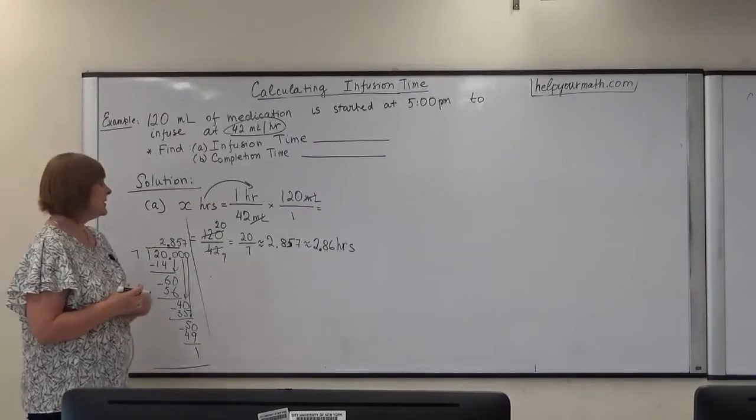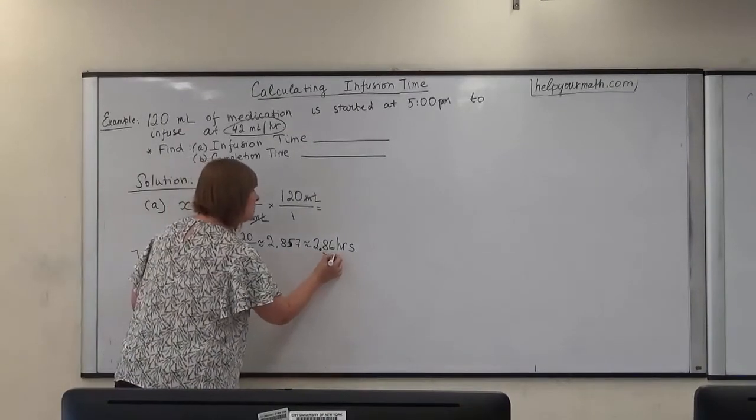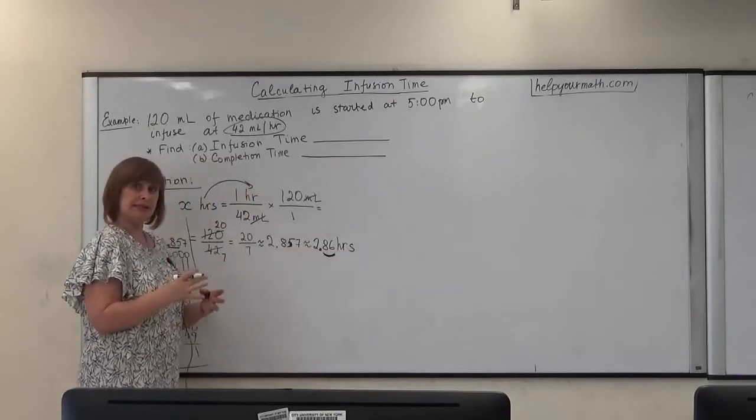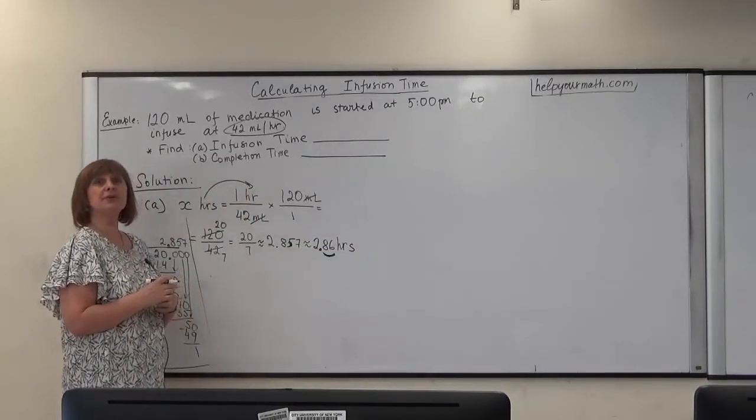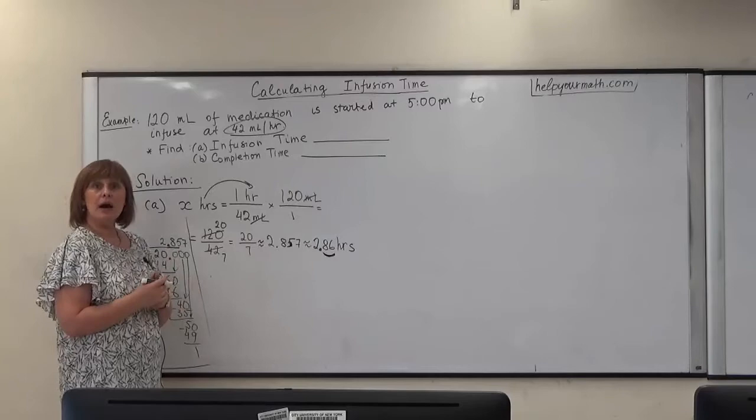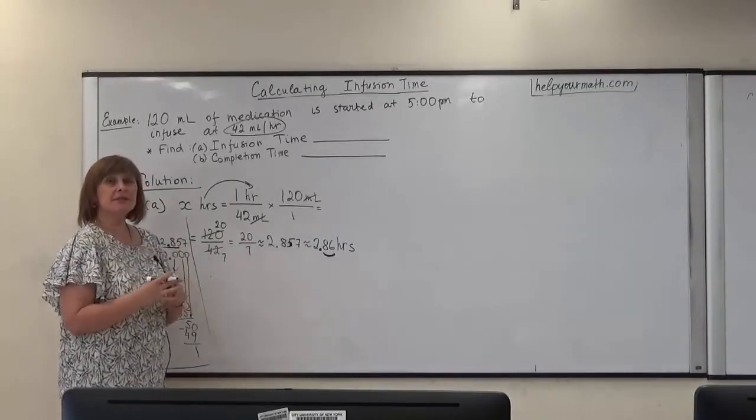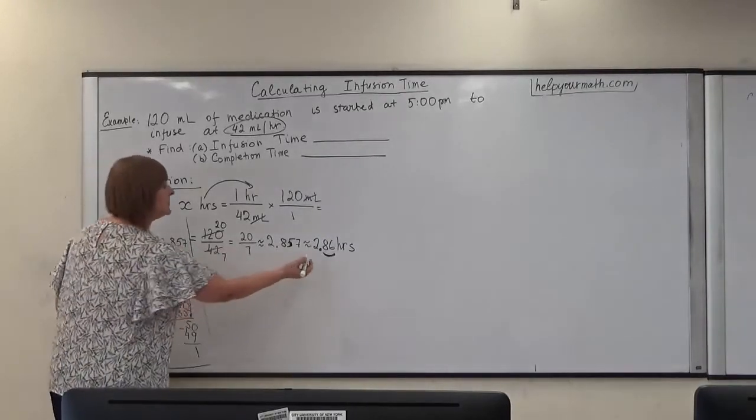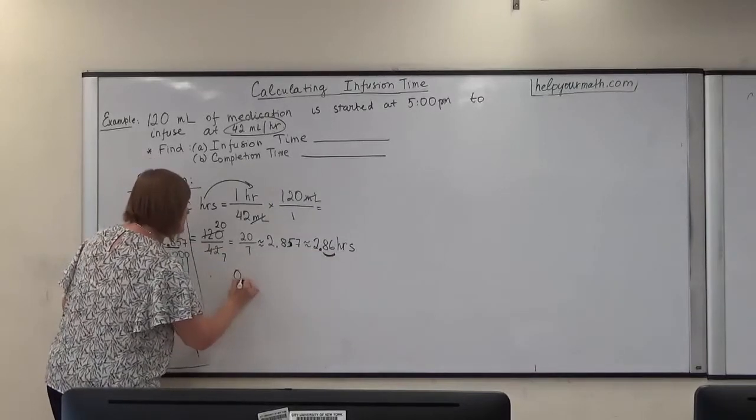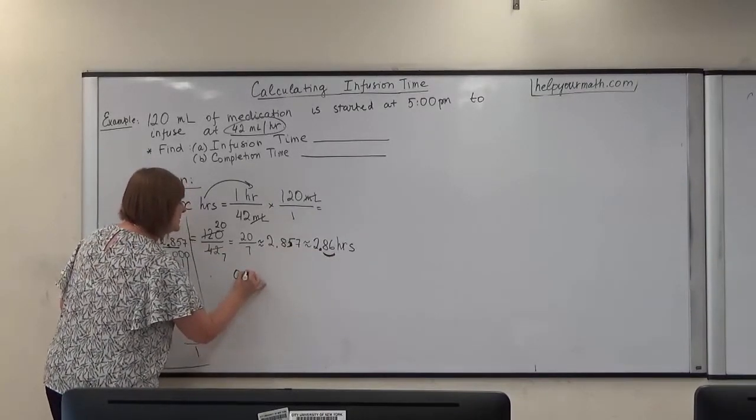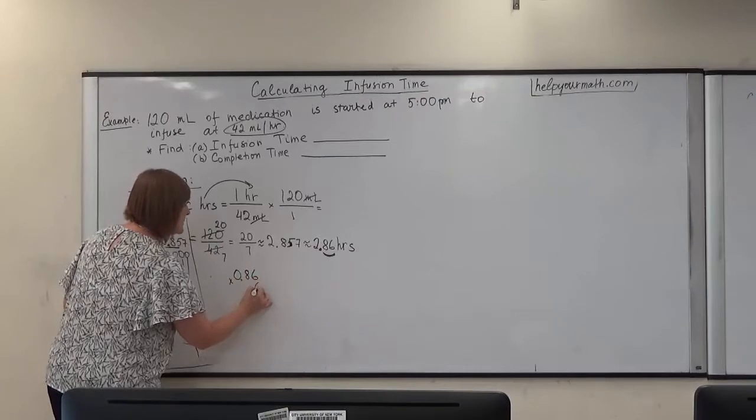We normally give the time as hours and minutes, so we need to do one extra step here. We need to convert the decimal part, because this is actually less than 1 hour. We need to convert that into minutes. So we know that there are 60 minutes in 1 hour. That's why we will multiply that decimal only 0.86 by 60.